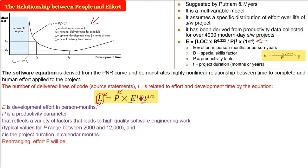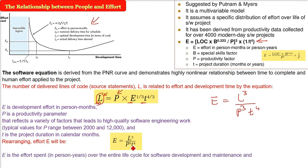And T of course is the project duration in calendar months. Now let us rearrange it. This effort E will give a very good equation: L raise 3 divided by P raise 3, T raise 4. So E is the effort spent in person years, please remember person year, over the entire life cycle for software development and maintenance. And T is the development time in years.